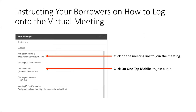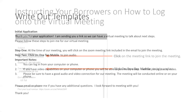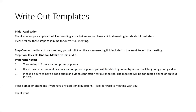I recommend adding some instructions to the email, such as: click on the meeting link to join the meeting, and click on OneTap Mobile to join audio. I also like to make things duplicatable, so I recommend writing out templates. Write them in a Word document, save them in a folder called Zoom Meetings or Virtual Meetings, and have different templates for each scenario — one for your initial application, one for your real estate partners, one for closing.